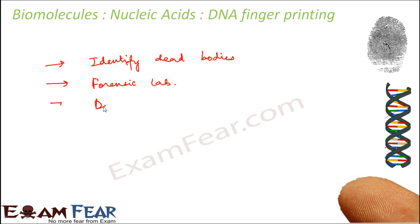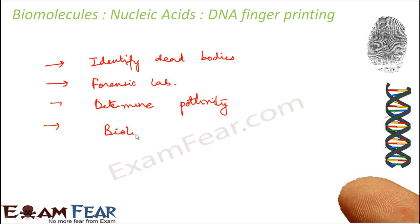DNA fingerprinting also helps in determining paternity. If you have a child and want to know who the father is, it can help because the DNA sequence of the child and the father will have some correlation. So you can identify paternity. It also helps to study biological evolution — that is, which organisms evolved from which organism. These are some of the important applications of DNA fingerprinting.